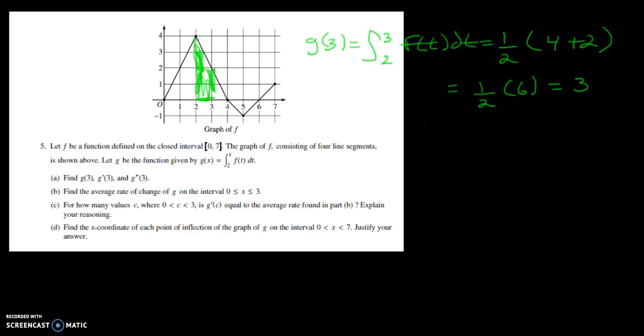The next part of the question says what's g prime of 3. g prime of 3 is basically where is it at 3 which is 2.